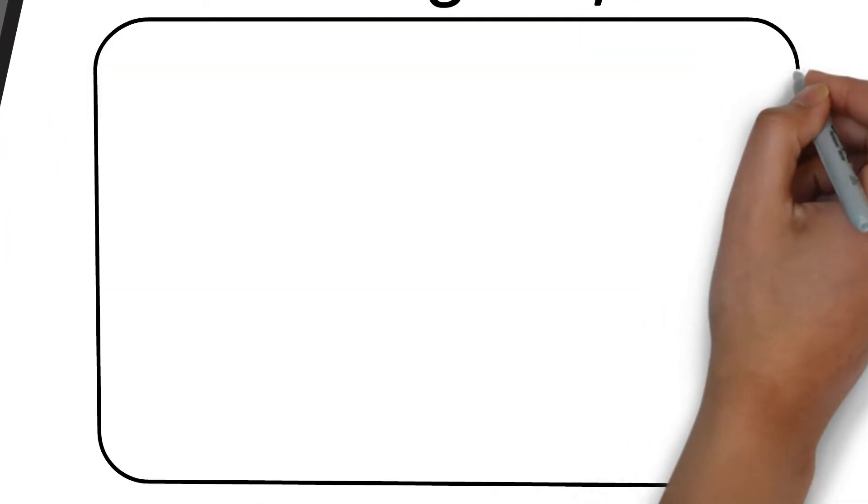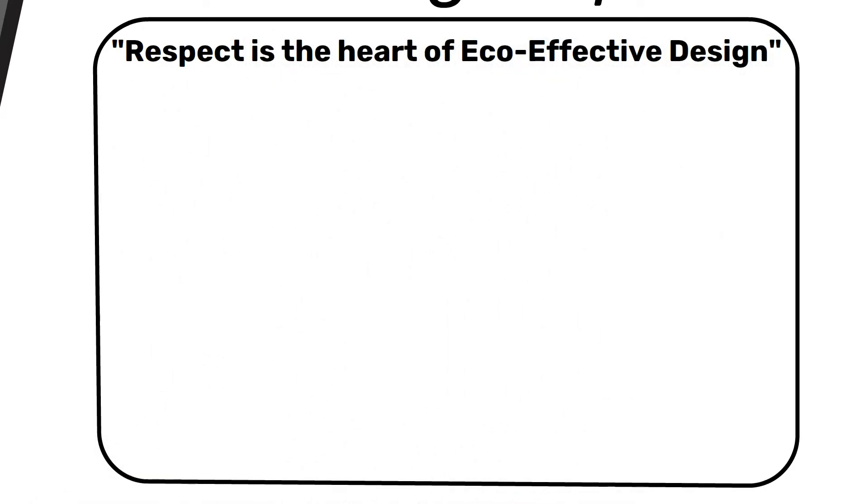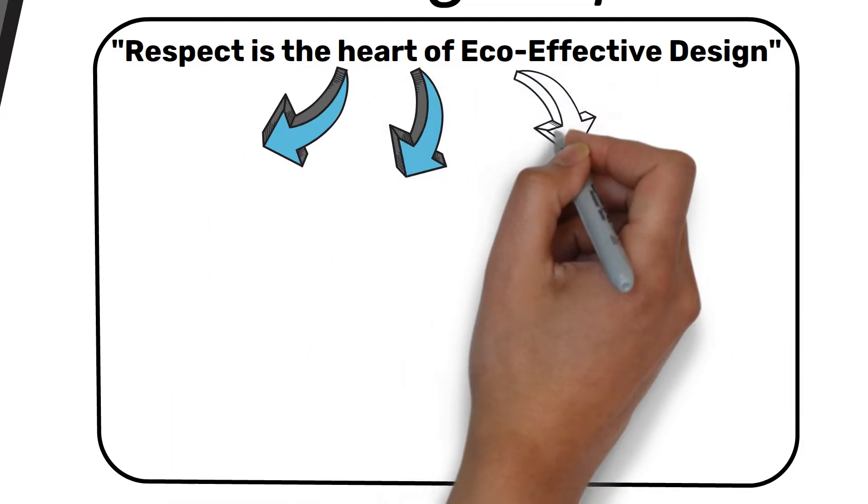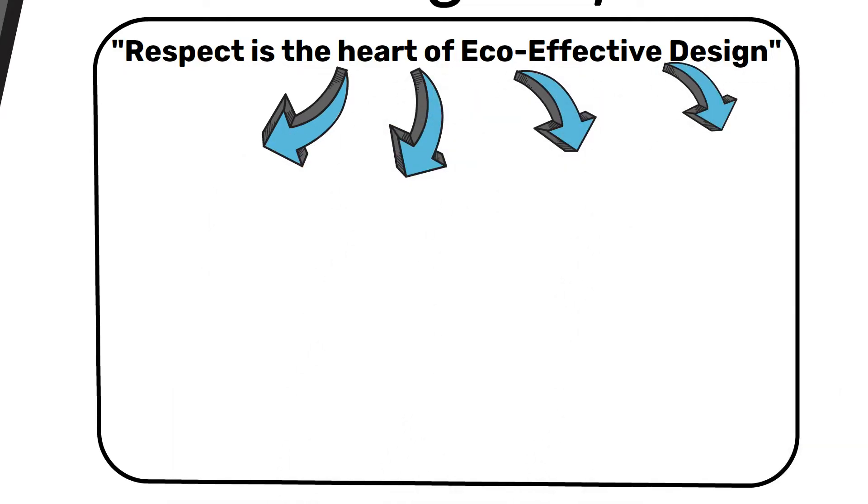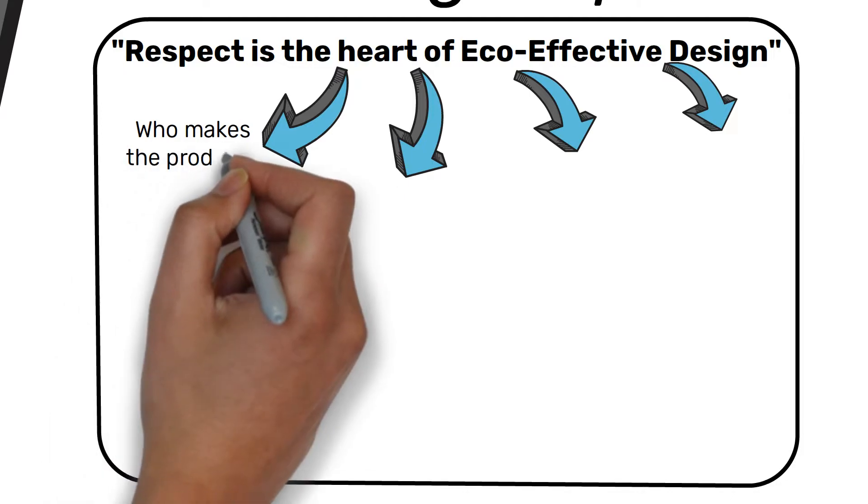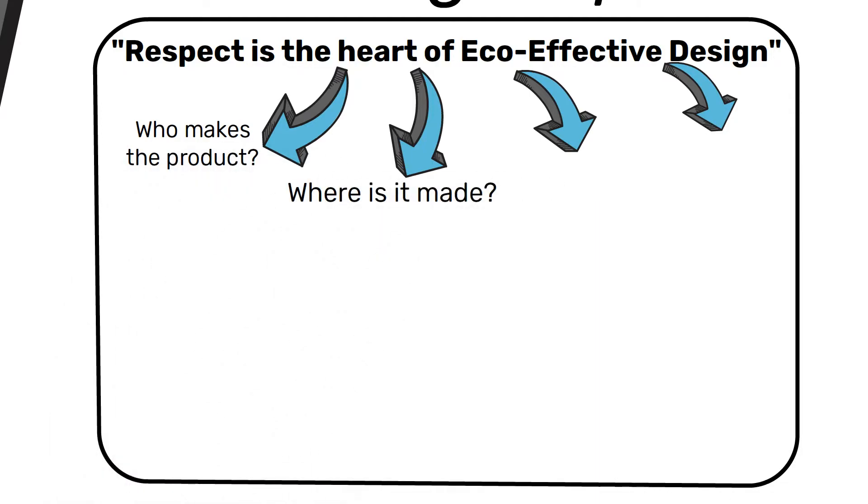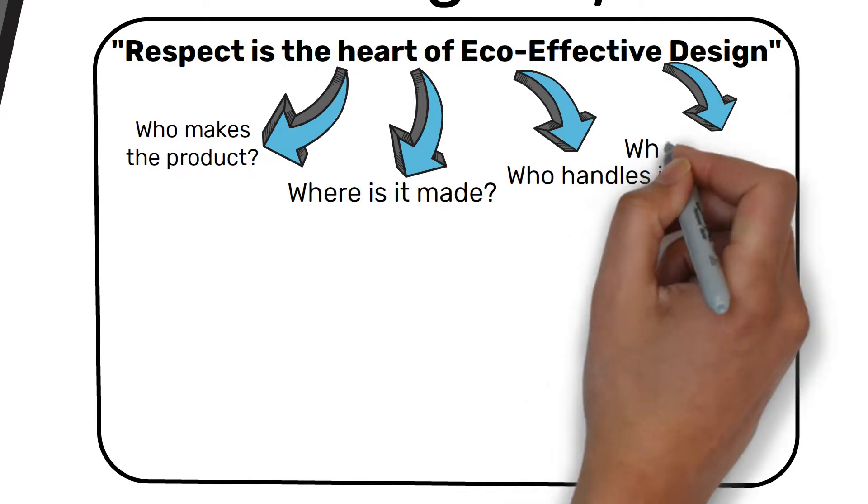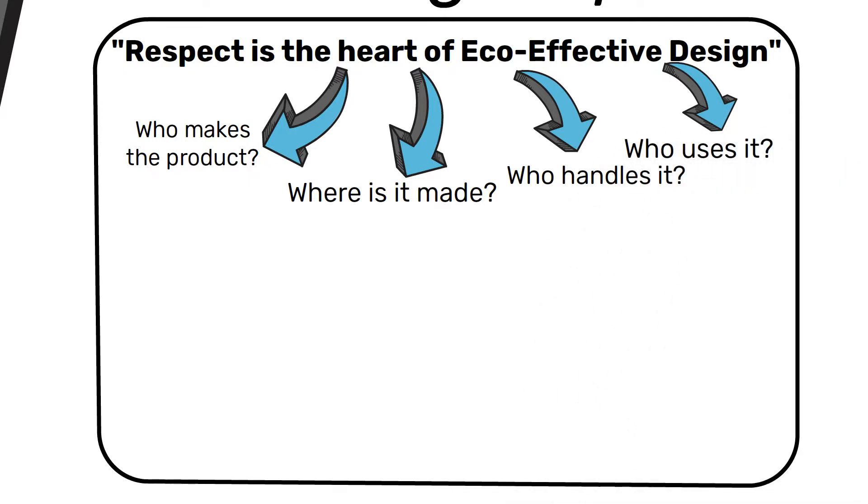Preferring respect: The issue of respect is at the heart of eco-effective design and although it is a difficult quality to quantify, it is manifested on several different levels, such as by respecting those who make the product, the communities near where it is made, those who handle and transport it, and ultimately the customer who uses it.